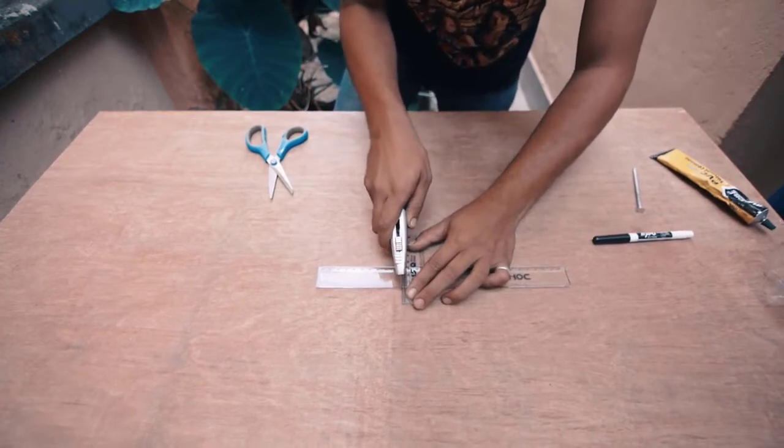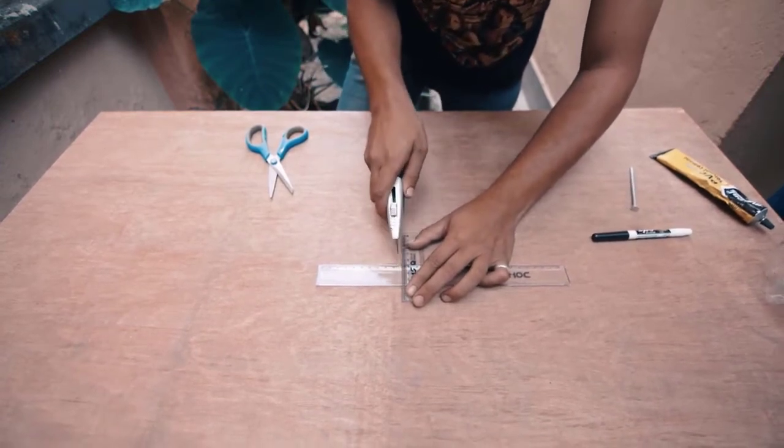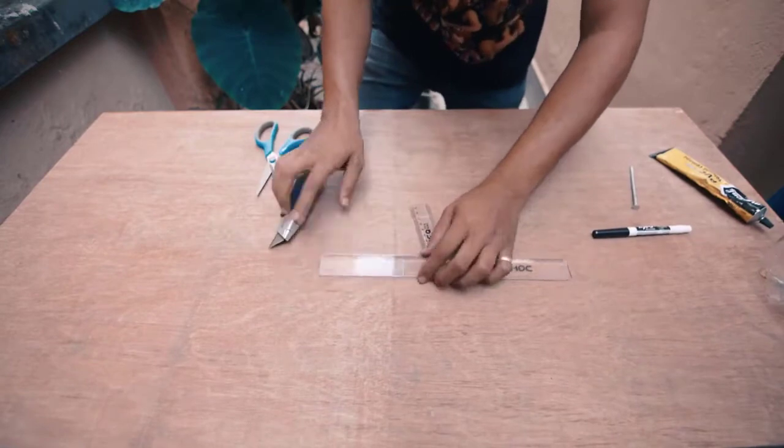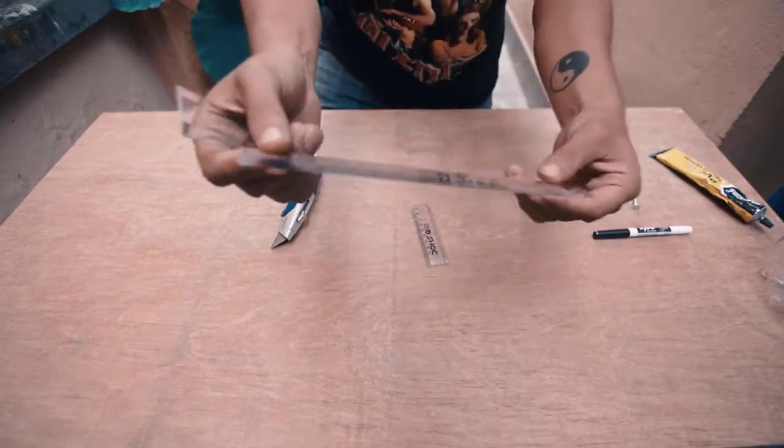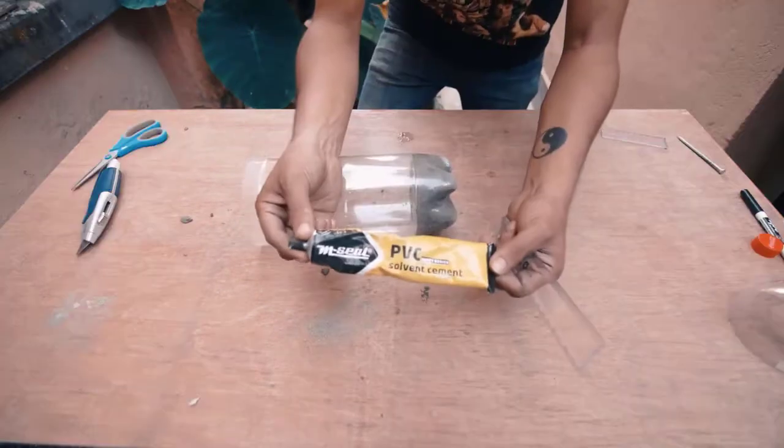Now if your gauge ended up being a little bit taller or shorter it's fine to cut this at a different length. It's just important that you match the size of your rain gauge with this size of your ruler.